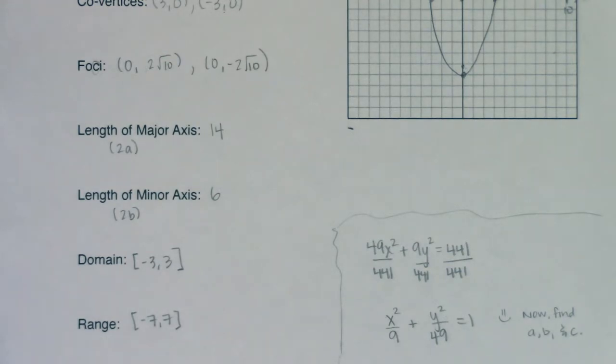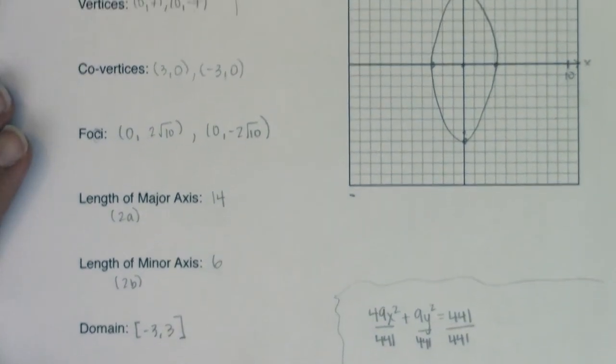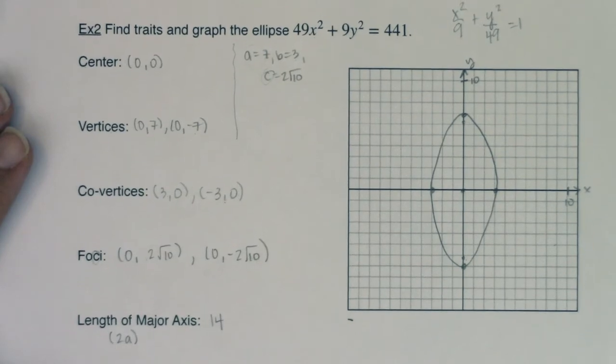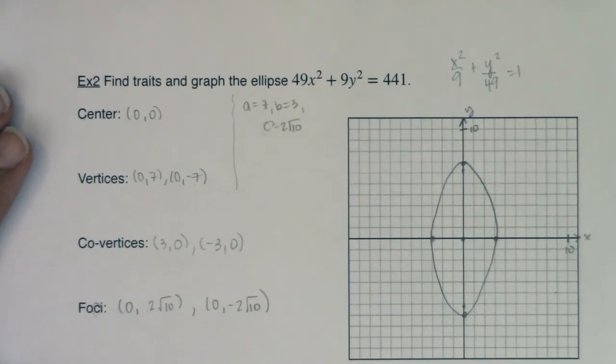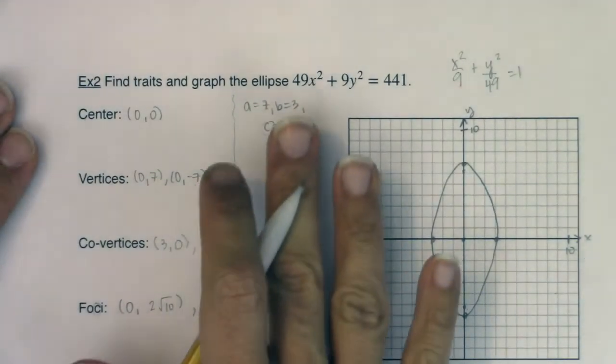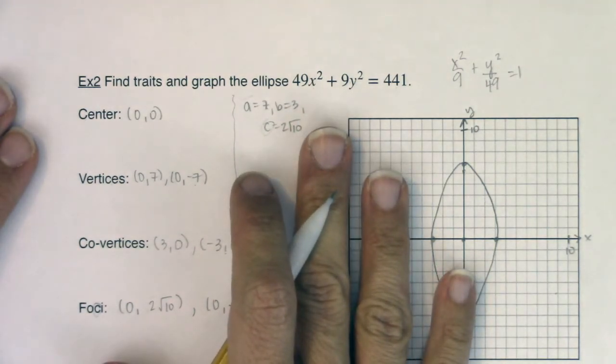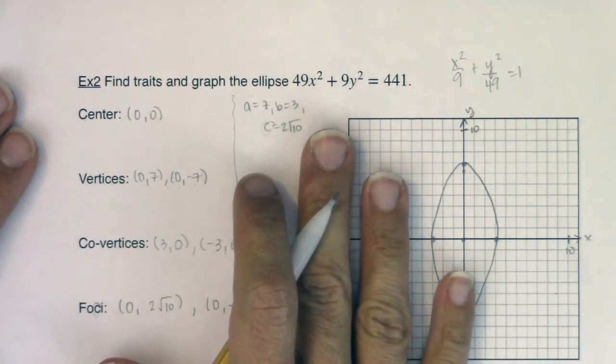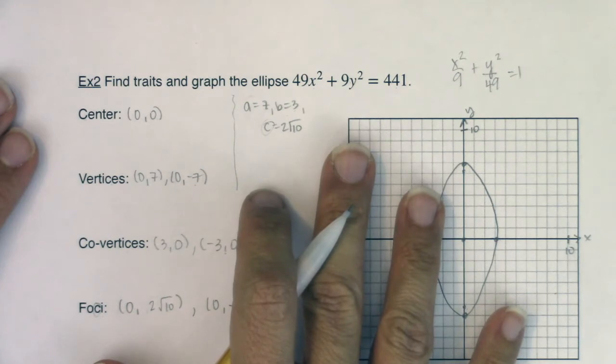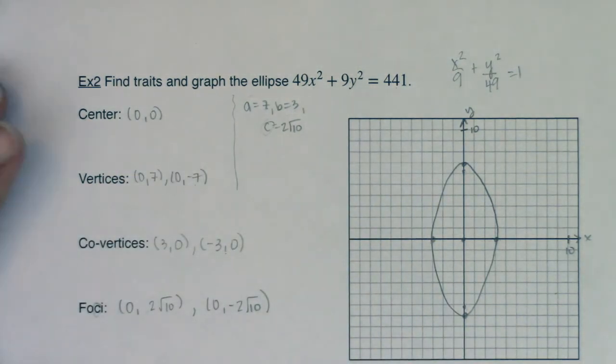So with that, we're going to flip to the next example. And we're going to leave behind our centers being nice and at the origin here. We're going to have to complete a square to find our center. And things are going to get that much more complicated once your center moves away from your origin. So we're going to play all of these ellipses traits out with an equation that is not in standard form, that we need to complete the square to get into standard form. And then our center won't be at the origin anymore. So I will catch you in a little bit. Thanks so much. Bye.